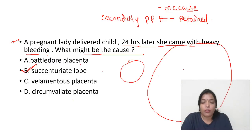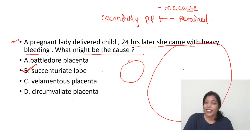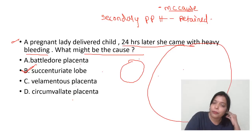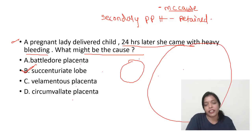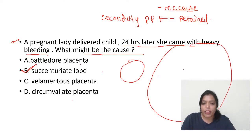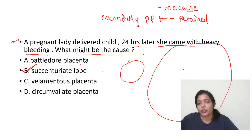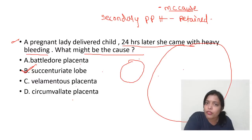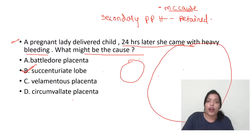Regarding breast engorgement: the foremilk contains mostly water. When there is breast engorgement, there is plenty of foremilk, which fills the baby's stomach and the baby doesn't suck until they reach the hindmilk. Babies should suck at least 20 minutes to empty both foremilk and hindmilk. The ideal advice is to ask the mother to feed every 2 hours on alternate breasts.